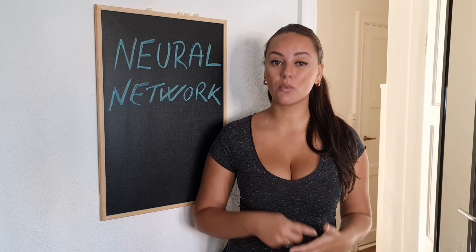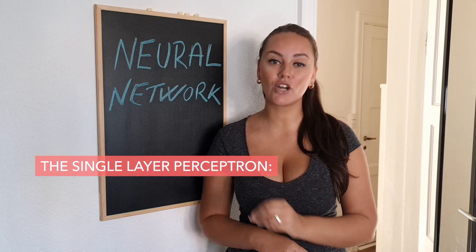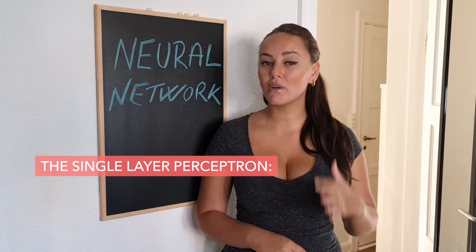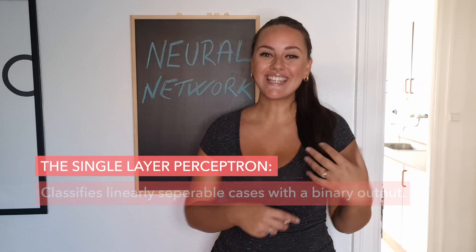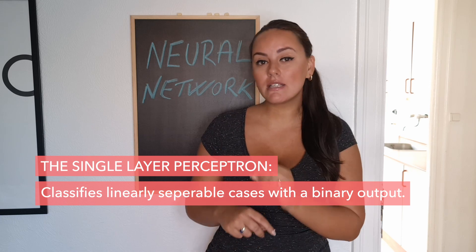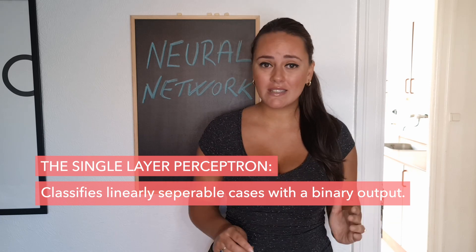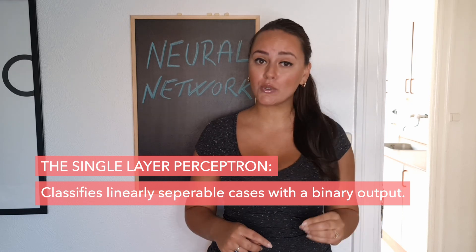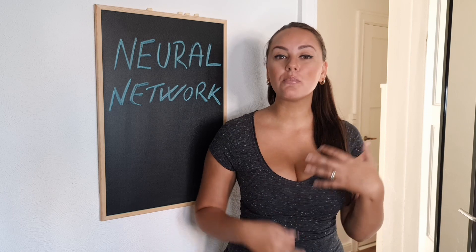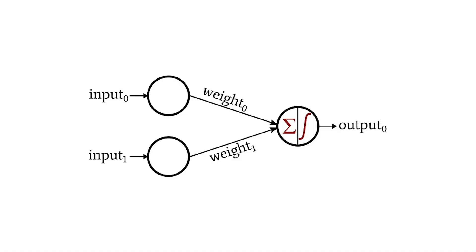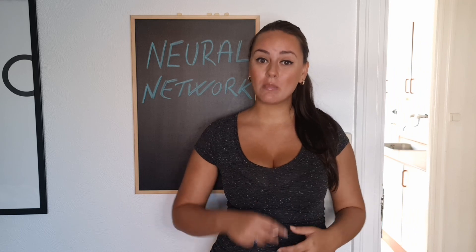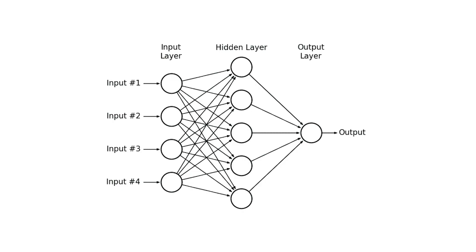Now that you're more familiar with neural networks, let's talk about the single layer perceptron. I know it sounds fancy, but it's actually the simplest neural network. The single layer perceptron classifies linearly separable cases with a binary output — all that means is that after its calculations, the output will be either one or zero. The computation is done through calculating the sum of the input vector multiplied by the corresponding element of vector weights, and that sum is then added as an input through an activation function. Now the multilayer perceptron behaves pretty much the same way, but it has hidden layers in which some mathematical wizardry happens.